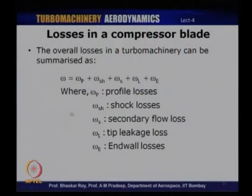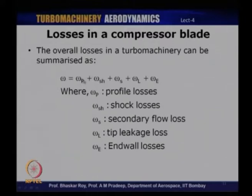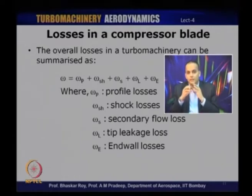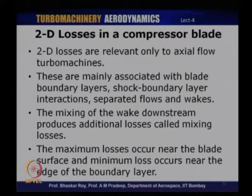The overall loss in a turbo machine can be summarized as the sum of all different components: profile loss, shock losses (true only for a transonic machine where the flow is supersonic), secondary flow loss, tip leakage flow loss (these are 3D losses), and end wall losses. The mixing loss is usually added into the profile loss, and we are going to estimate the sum total of mixing and profile losses empirically. We will now look at 2D losses, taking the profile loss and mixing loss together, with 3D losses to be discussed in a separate lecture.